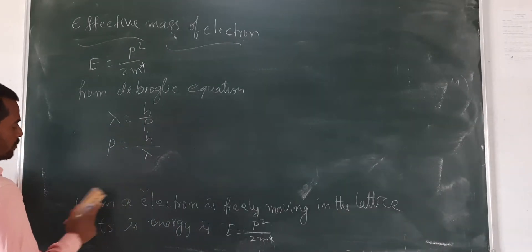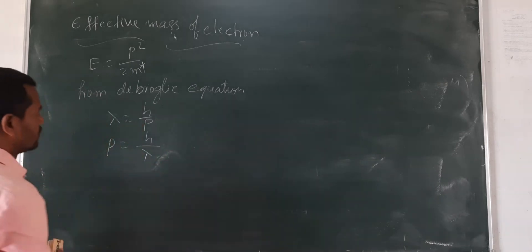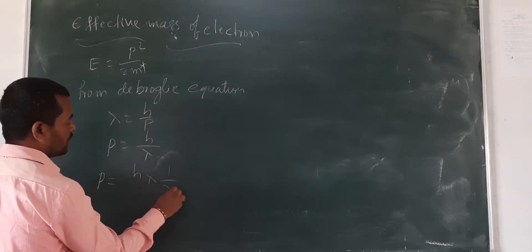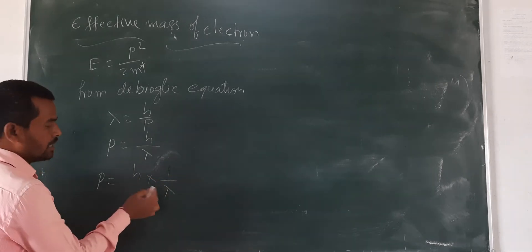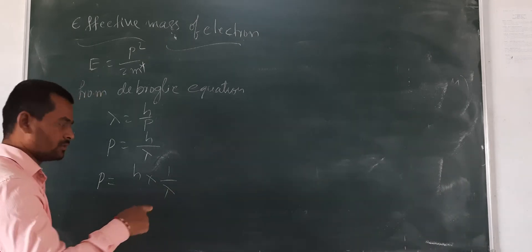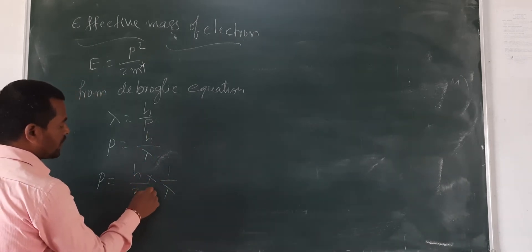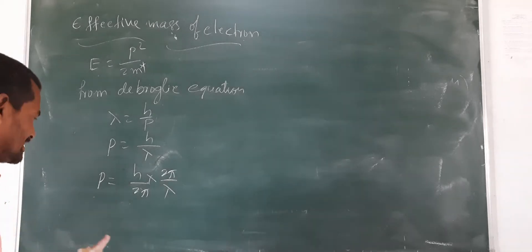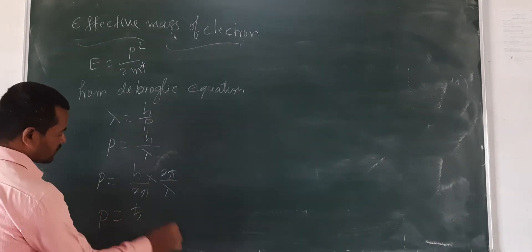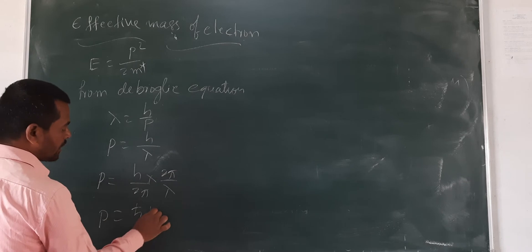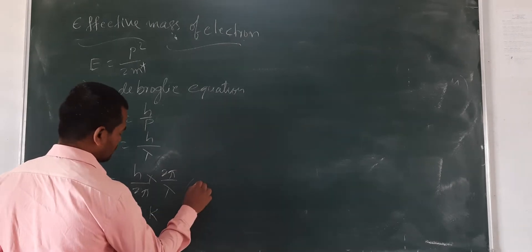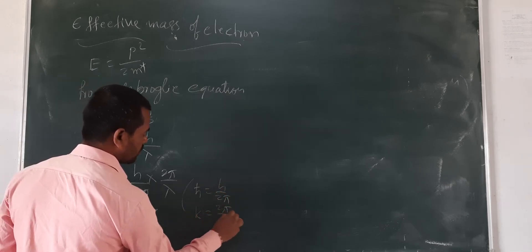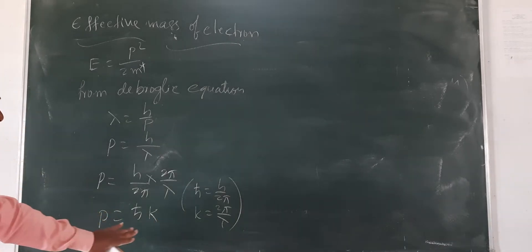Now here we have the p value. From this, p is equal to h by lambda. Now I am going to change it. We can write this, multiply and divide by 2π above and below. So 2π h by 2π can be written as h-cut, and 2π by lambda is k. Since h-cut means h by 2π, k means 2π by lambda.